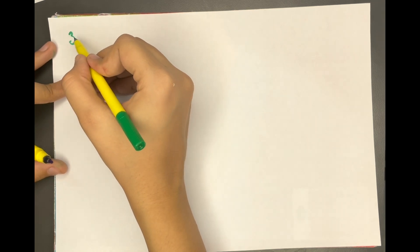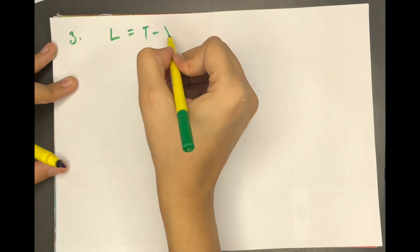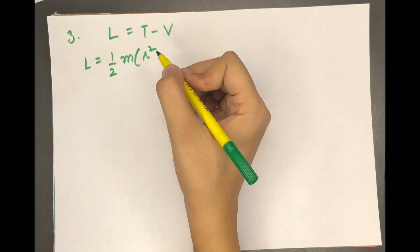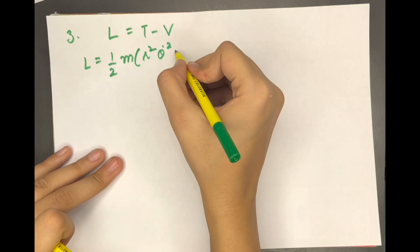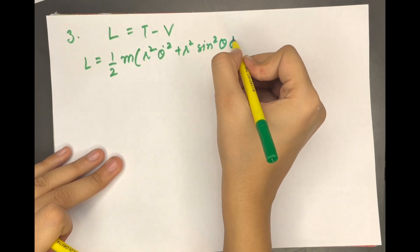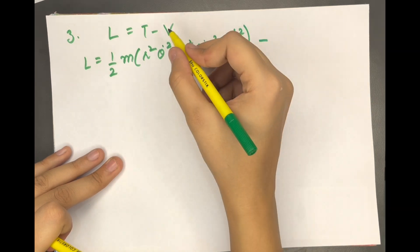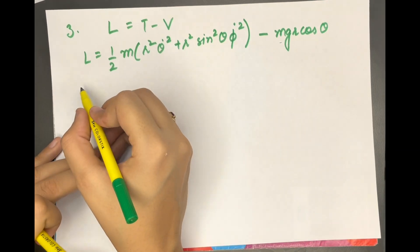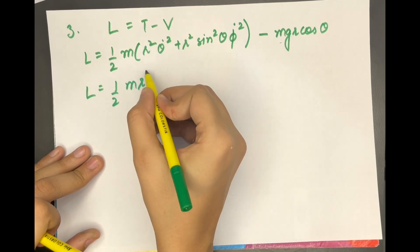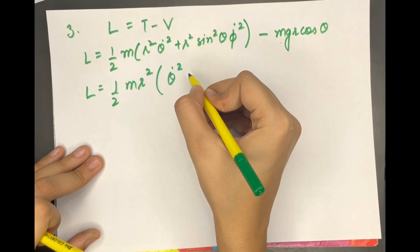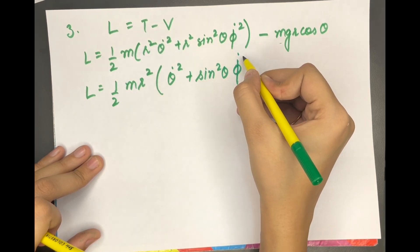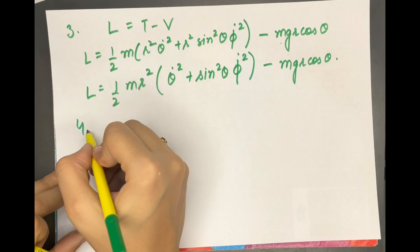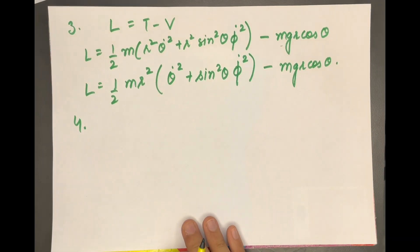Our third step is to calculate the Lagrangian L = T − V. So L = ½m(r² θ̇² + r² sin²θ φ̇²) − mgr cosθ. Taking r² out as a common factor: L = ½mr²(θ̇² + sin²θ φ̇²) − mgr cosθ.